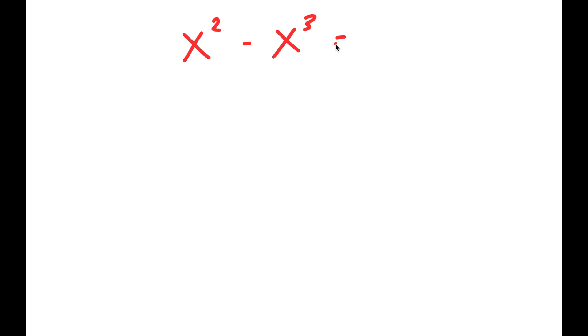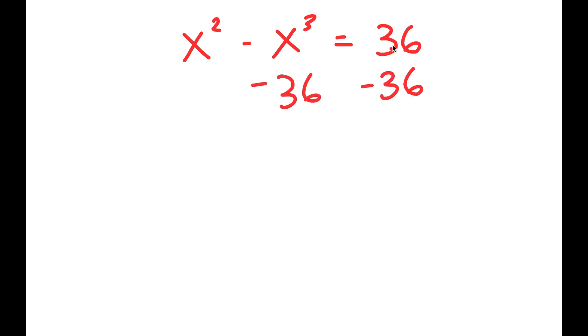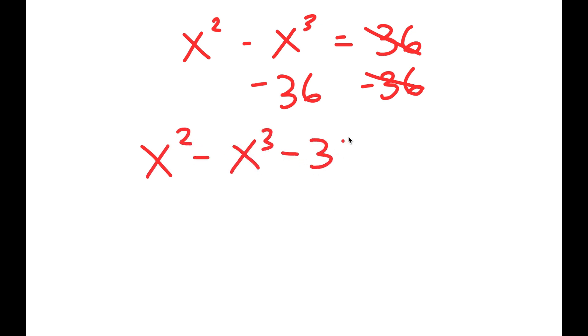In this video, I'm going to solve the equation x squared minus x cubed is equal to 36. To solve this, I'm going to first start by subtracting 36 on both sides. These two cancel out, and I get x squared minus x cubed minus 36 is equal to 0.